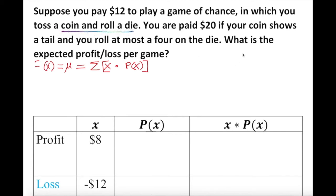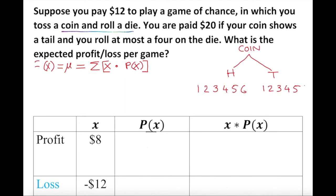I need to create a sample space so I can see clearly what's going on. The coin has two options: head and tail. Head will have 1, 2, 3, 4, 5, 6 options from the die, and tail will also have 1, 2, 3, 4, 5, 6 options.